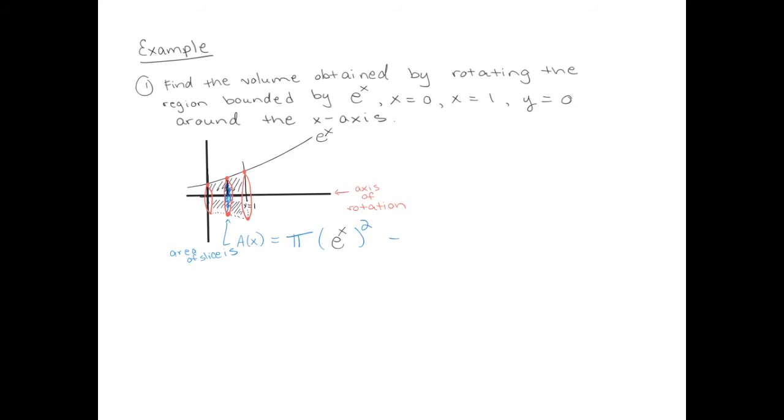Remember a power raised to a power, we multiply the powers, so here we're getting pi e to the 2x. So our volume formula will be the integral from x equals 0 to x equals 1 of the area, pi e to the 2x with respect to x. As you can see, the drawing and figuring out the integral is the hardest part of the problem.